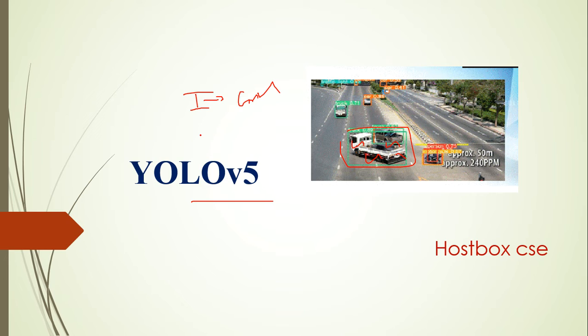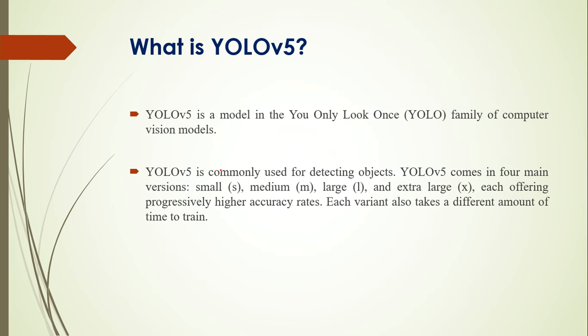As you know today, deep learning is growing. Deep learning has computer vision. Computer vision has a lot of things. One of the family algorithms followed by computer vision is YOLOv5. What is YOLOv5? It's one of the models, meaning You Only Look Once.